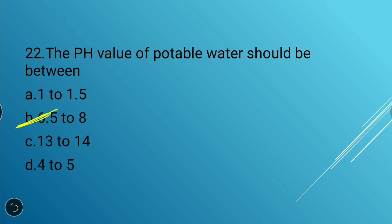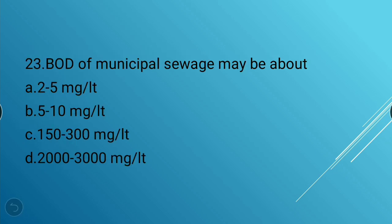Next question: BOD of municipal sewage may be about — 2 to 5 mg per liter, 5 to 10 mg per liter, 150 to 300 mg per liter, or 2000 to 3000 mg per liter. The answer is 150 to 300 mg per liter.